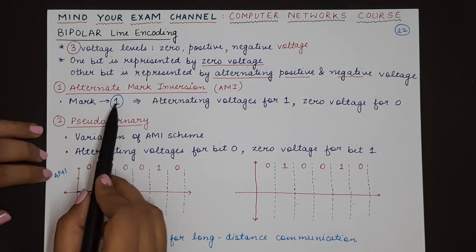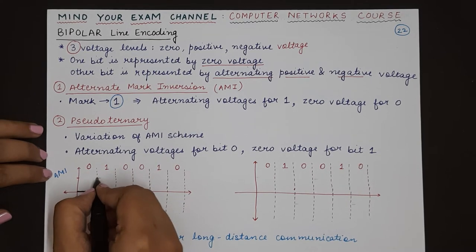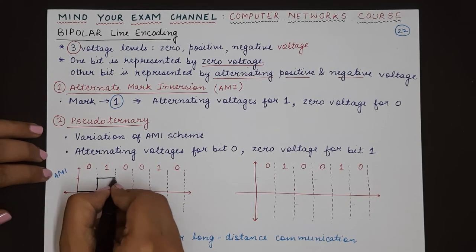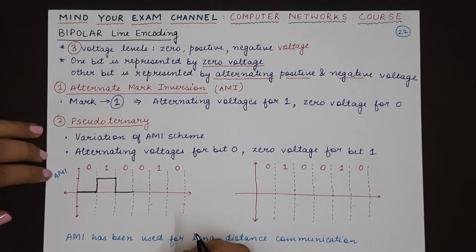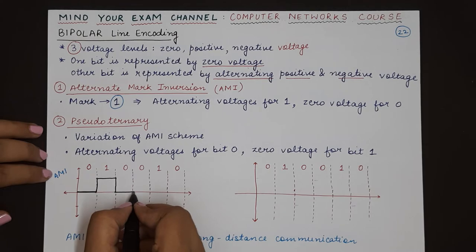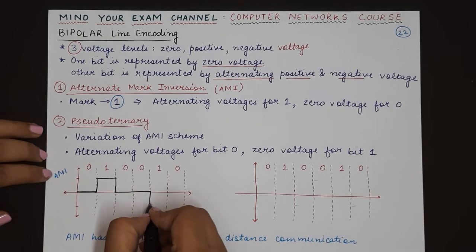We go from zero to positive voltage. Then we have a zero, so we come down to zero voltage. Again we have a zero, so we maintain at zero voltage. Next,